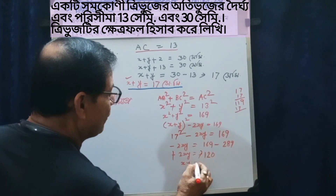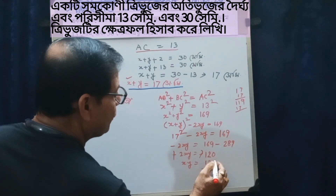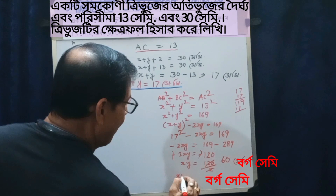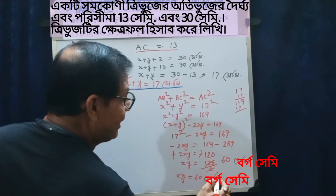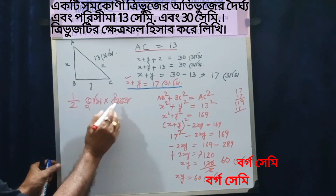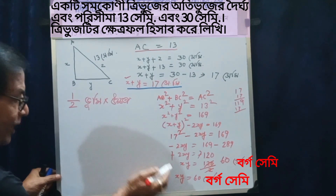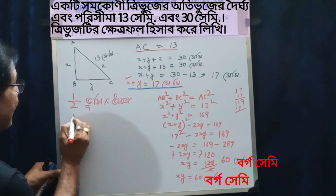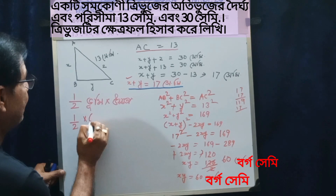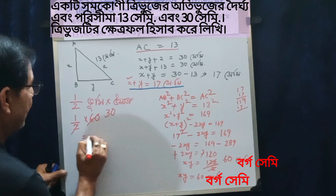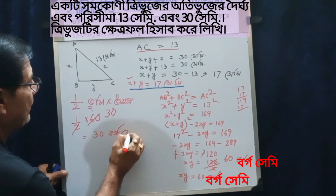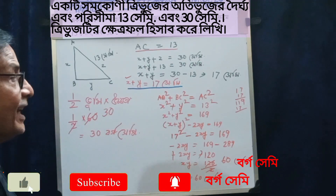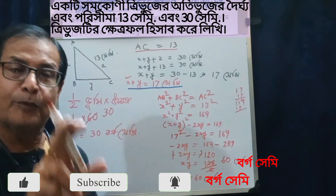minus 2xy — ત્યાં ગ્ઓ. xy = ? — x, y ÷ 2. હવે પિથાગોરાના સૂત્ર — આ સૂત્ર — આ સૂત્ર — આ આપણે ઉપયોગ કરીએ.